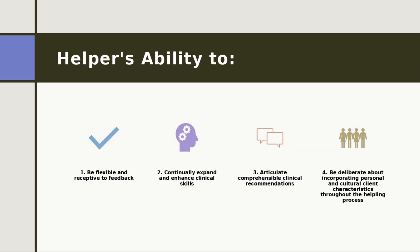You also have to be deliberate about incorporating personal and cultural client characteristics throughout the helping process. This doesn't mean that because your client is a member of a particular culture, you must select a specific intervention — rather, you have to take into consideration the influence of your client's culture on that particular client, and based on that influence, choose interventions that are most appropriate. You're not only looking at cultural characteristics, but also your client's personal characteristics — their coping style, personality, and likes and dislikes — which will also influence your choice of intervention.